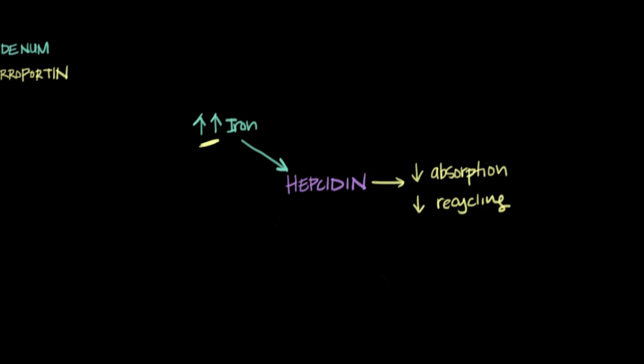In anemia of chronic disease, hepcidin is released in response to any inflammatory condition. By inflammatory condition, I mean things like infection, because the body mounts an inflammatory response to protect us from infection. I also mean things like cancer, because malignancy is a pretty inflammatory condition, and autoimmune diseases like rheumatoid arthritis or lupus.